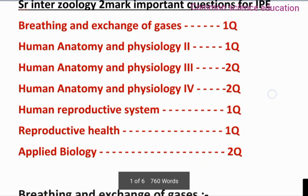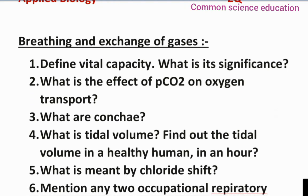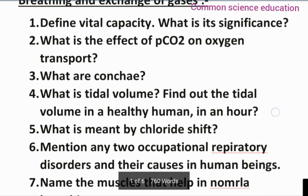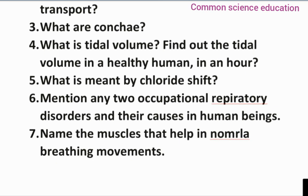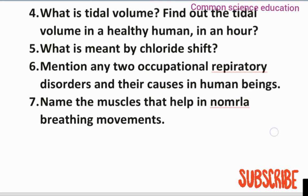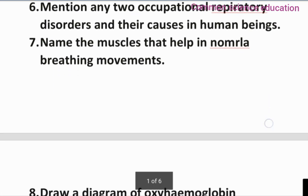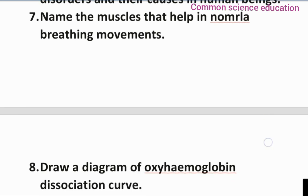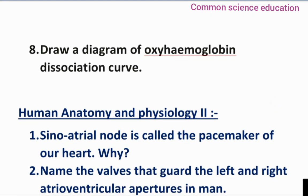First, breathing and exchange of gases important questions: Define vital capacity. What is the effect of pCO2 on oxygen transport? What are alveoli? What is the tidal volume? Find out the tidal volume in a healthy human on average. What is meant by chloride shift? Mention any two occupational respiratory disorders. Name the muscles that help in normal breathing movements. And draw a diagram of the oxy-hemoglobin dissociation curve.